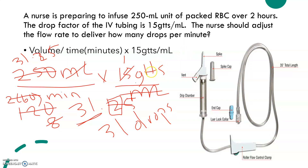Let's do some recapping. The order is 250 ml of packed red blood cells over 2 hours. The drip factor of the IV tubing is 15 gTTS per ml. The nurse should adjust the flow rate to deliver how many drops to accomplish this in 2 hours. The formula is: volume — 250 ml — over the time in minutes, which gives us 120 minutes, times 15 gTTS over ml. Cancel the mls. 15 into itself is 1, 15 into 120 is 8, 8 into itself is 1, and 8 into 250 is 31.25.